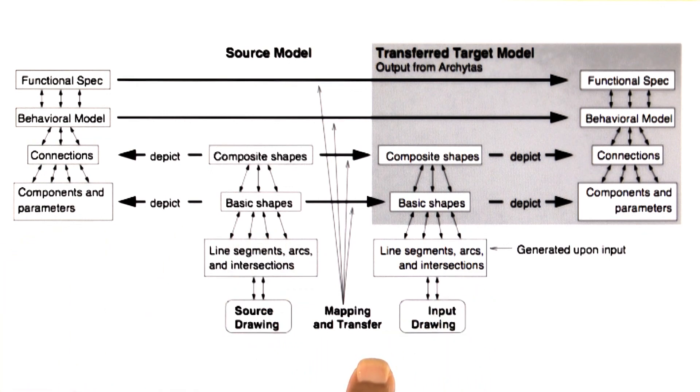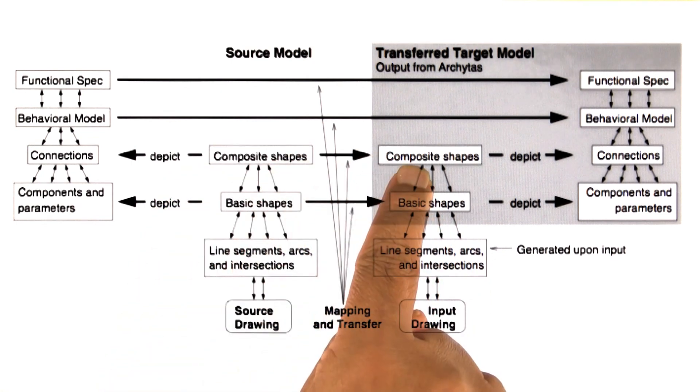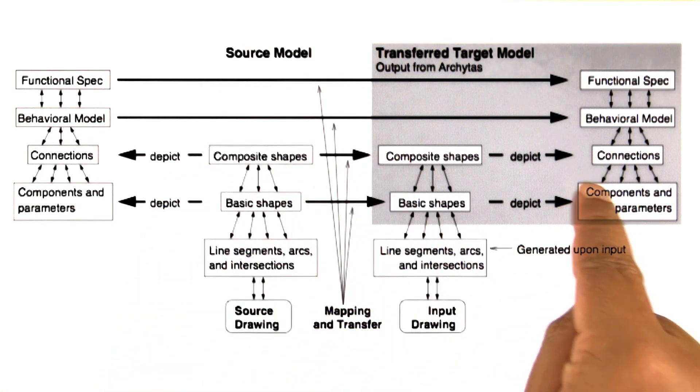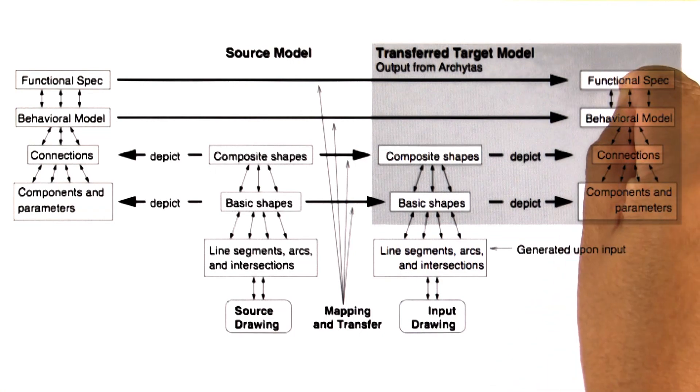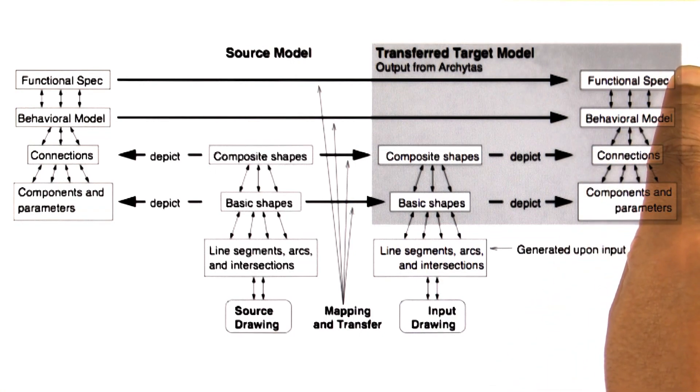When a new drawing was input into Archytos, then it generated line segments and arcs and intersections from it. And then it started mapping them to the lines and segments and arcs of previously known drawings. Retrieved the drawing that was the closest matching drawing to the new drawing. And then started transferring basic shapes, and then composite shapes. And it transferred each element through this abstraction hierarchy, all the way up to the functional level.